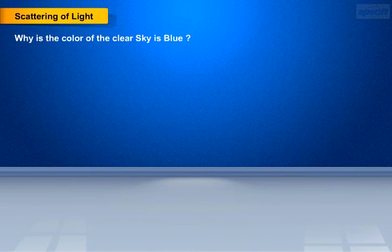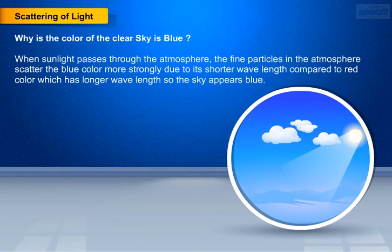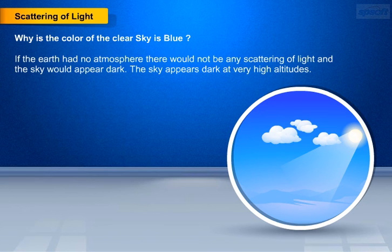Now let's know why the color of the clear sky is blue. When sunlight passes through the atmosphere, the fine particles in the atmosphere scatter the blue color more strongly due to its shorter wavelength compared to red color, which has longer wavelength. So the sky appears blue.